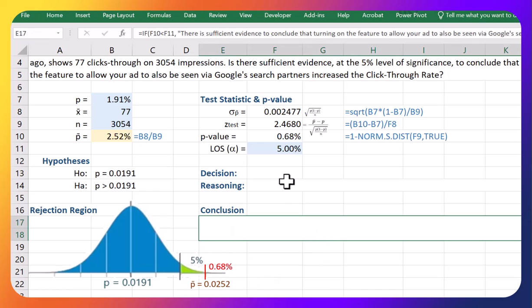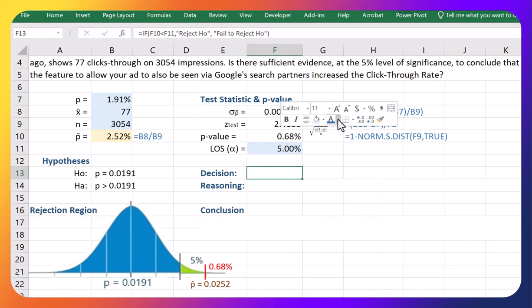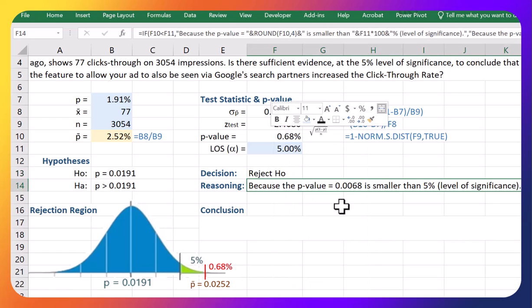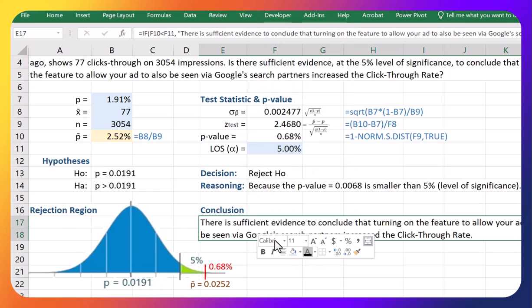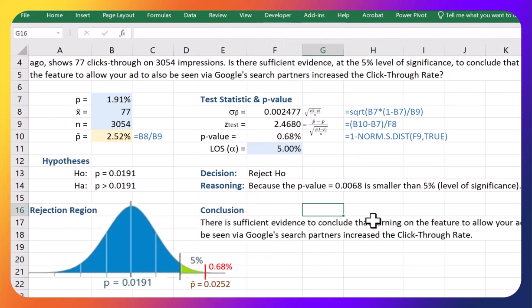So yeah it is very high, so decision will be to reject H₀ since this guy's much smaller than the 5 percent. So anytime your p-value is smaller than your level of significance, reject H₀.